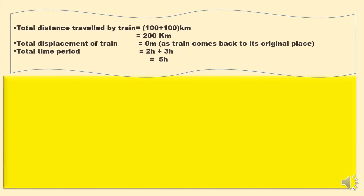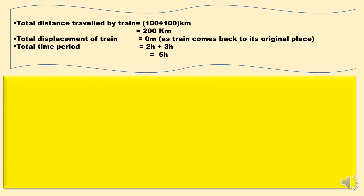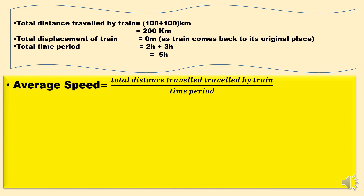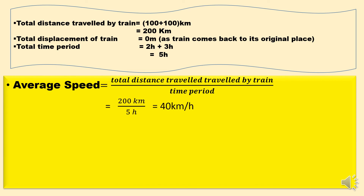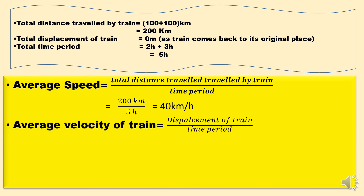Now let's substitute the values. Average speed equals total distance traveled by train divided by total time: 200 upon 5 hours equals 40 kilometers per hour — that is the average speed. The unit is kilometer per hour because distance is in kilometers and time is in hours. For average velocity: displacement of the train divided by time period — total displacement is zero, so zero upon five hours equals zero meter per second. That is the average velocity of the train.